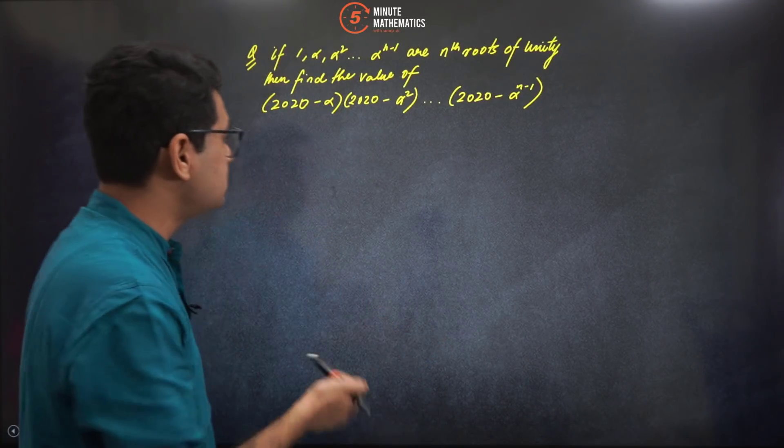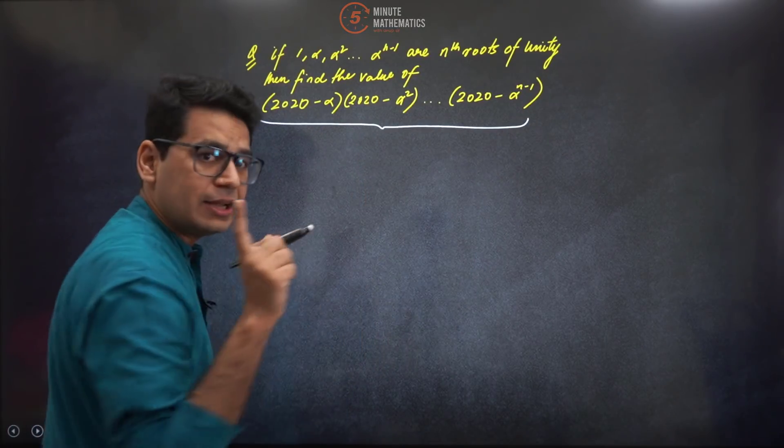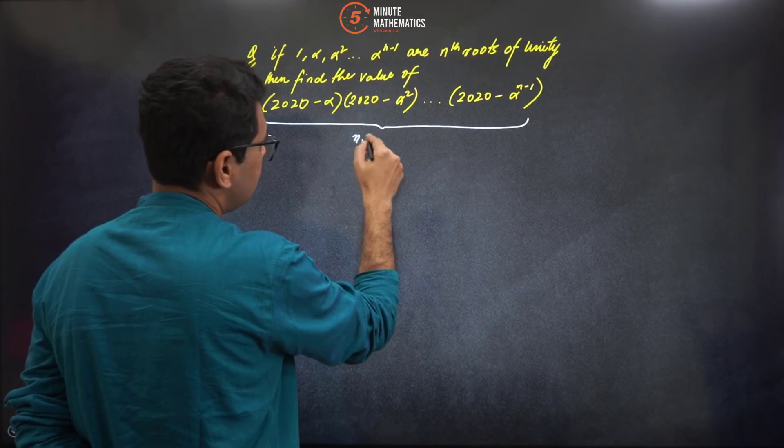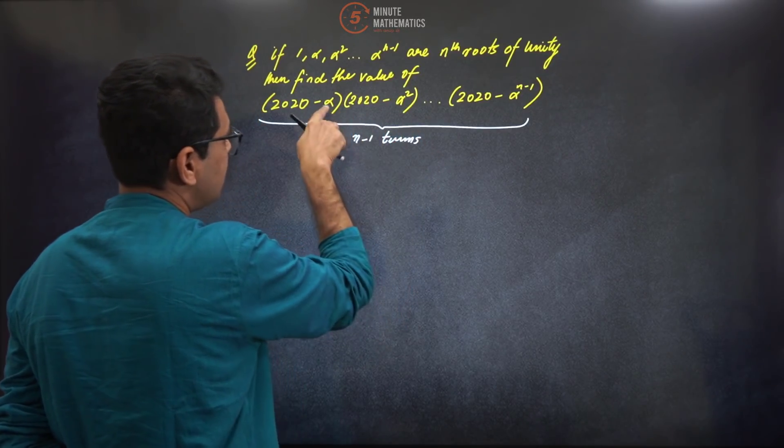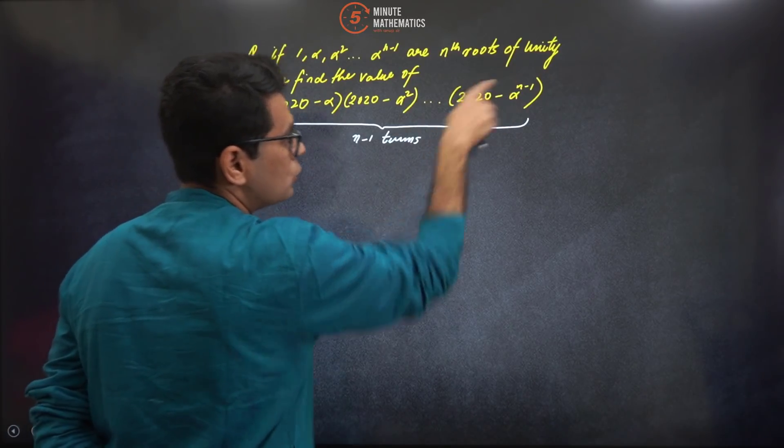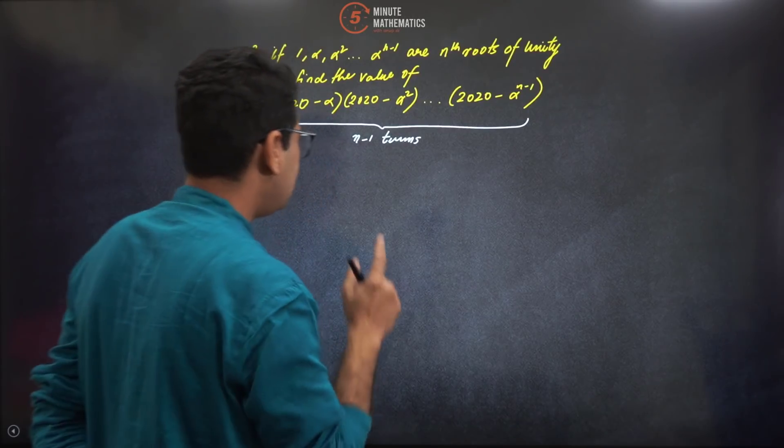First of all, how many terms are there? There are n minus one terms. How did we decide this? Because if you notice, alpha here has power one and it goes to n minus one. One to n minus one are n minus one terms.